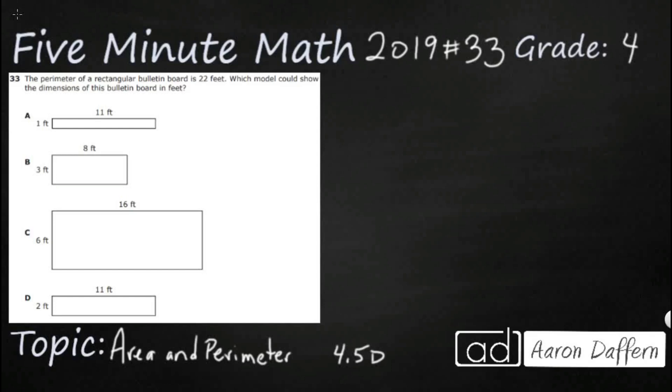Hello, and welcome to 5-Minute Math. Today we are looking at the fourth grade concept of area and perimeter. This is standard 4.5D in the great state of Texas, and we are using item number 33 off the 2019 released STAAR test.